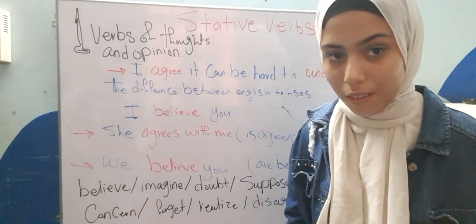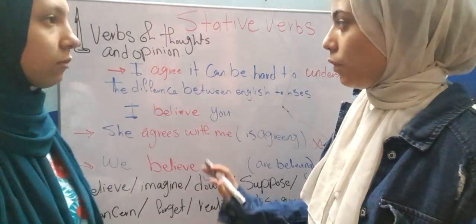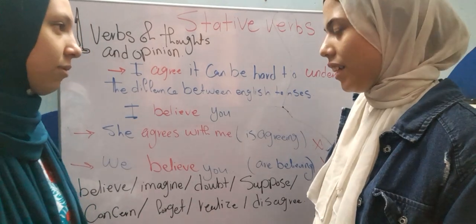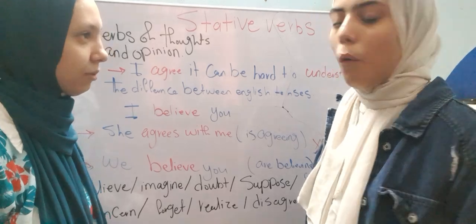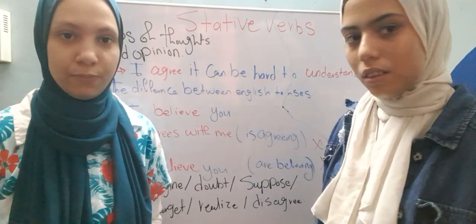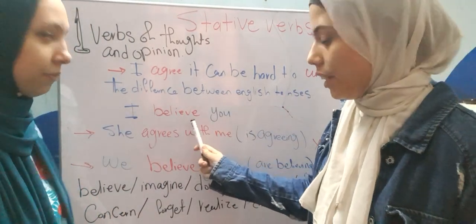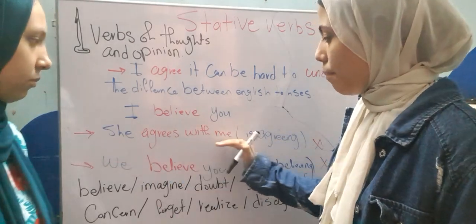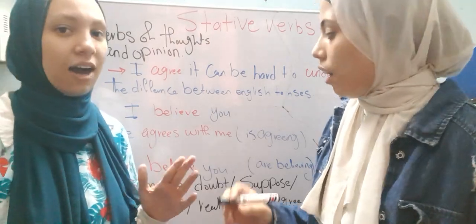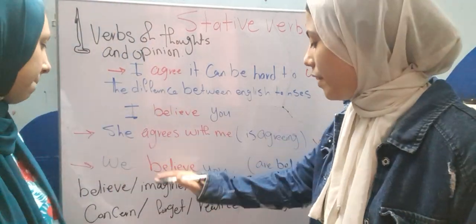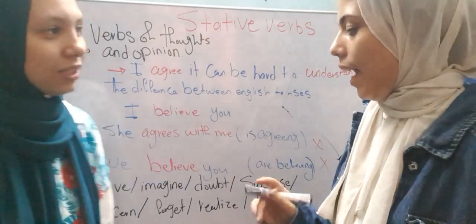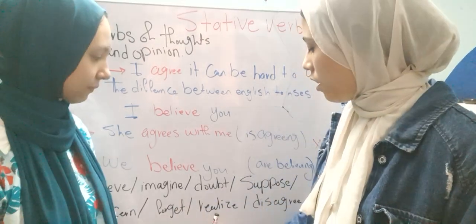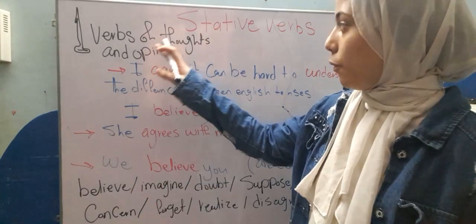The first category is verbs of thoughts and opinions. For example: 'I agree it can be so difficult to understand the difference between sentences in English.' 'I believe you.' The stative verbs there are agree, understand, and believe — they describe a state, not an action. So we say 'she agrees with me', not 'she is agreeing with me'. We say 'we believe you', not 'we are believing you'. Examples include: believe, imagine, suppose, concern, forget, realize, and disagree.